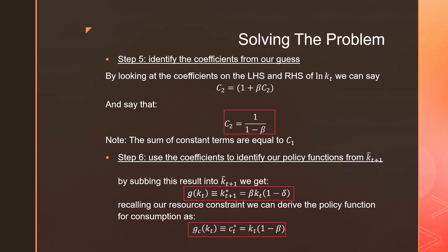And by recalling our resource constraint, right, using this policy function, we can sub that in and get C_T star is equal to K_T times (1 - beta).